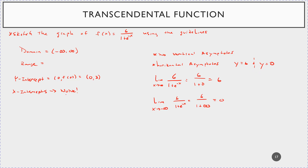So what that means is our range is bounded between 0 and 6 — the range is the open interval (0, 6). We now have the basic information: no x-intercepts, one y-intercept at (0, 3), domain all reals, and range (0, 6).